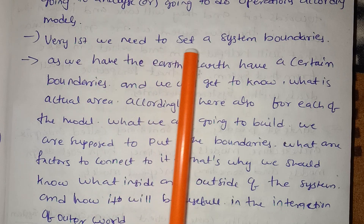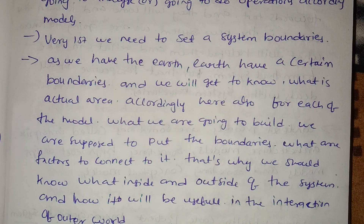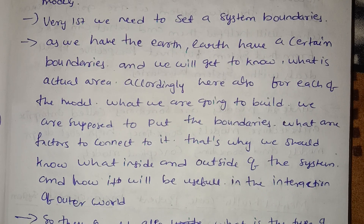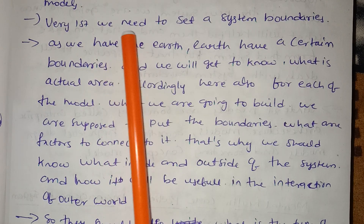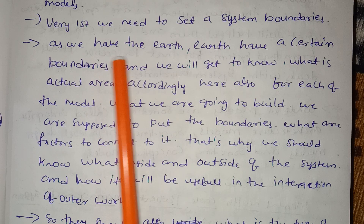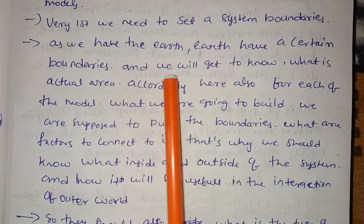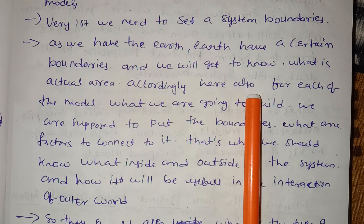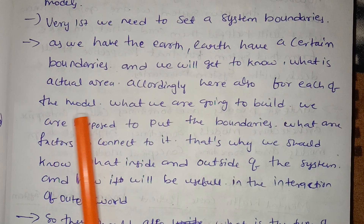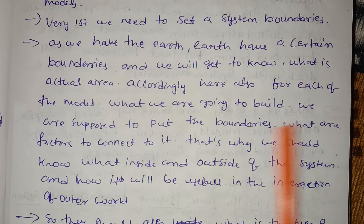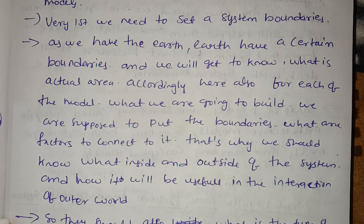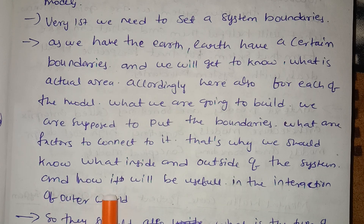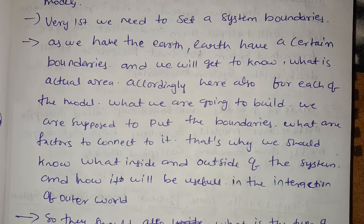First, we need to set system boundaries. We are going to define the system boundaries — what is inside and outside of the system. Just as the earth has certain boundaries, each model we build must have defined boundaries. We should know the factors that connect it and how the system will be useful for interaction with the outer world.